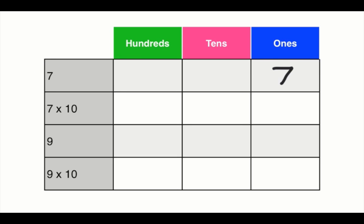Now since we are multiplying by 10, we are going to shift the 7 over one column in the place value chart, moving it to the tens column. In the ones column, we take the 0 from the 10 that we're multiplying by and place it in the ones, giving us the answer of 70.